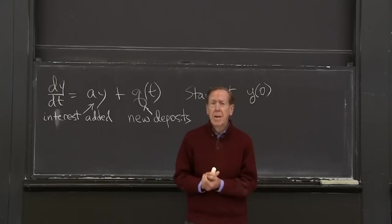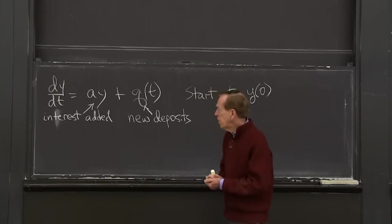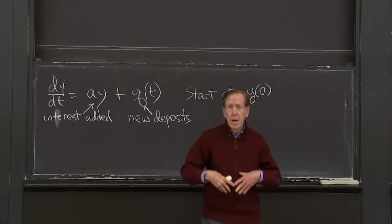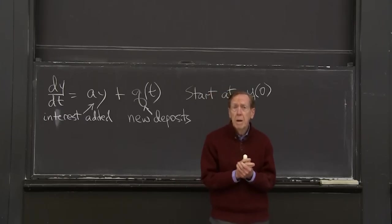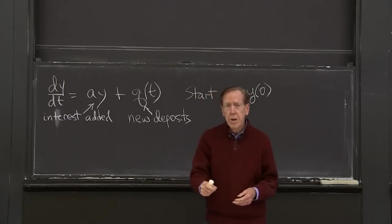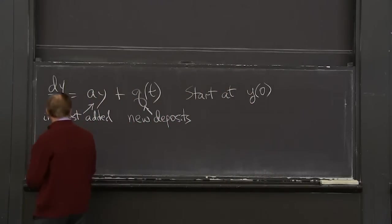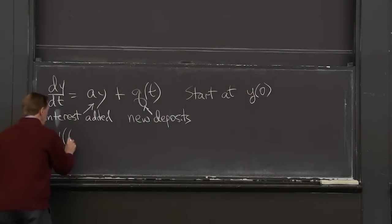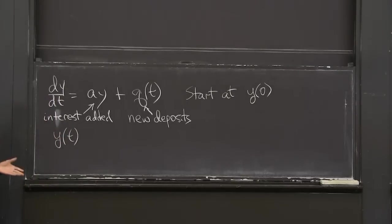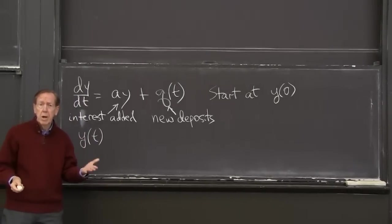And we want to understand the formula. So may I write the formula down? And then let's see why it's right. And then, of course, we could put it into the equation and confirm that it's right. OK, the formula is going to be this is the big formula, you could say, for first order linear equations.